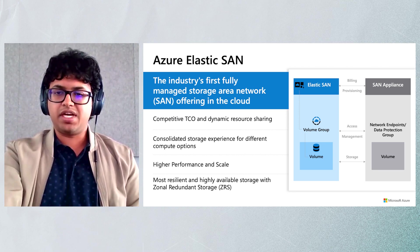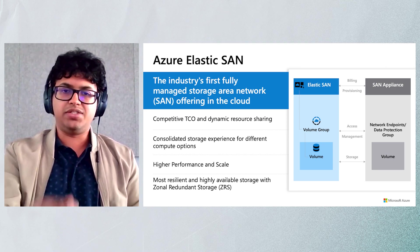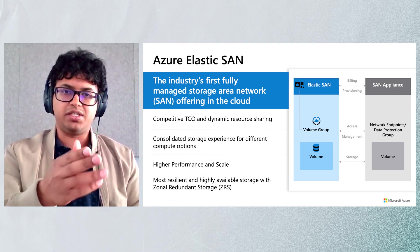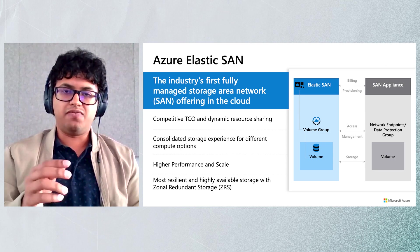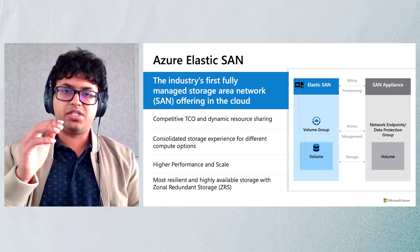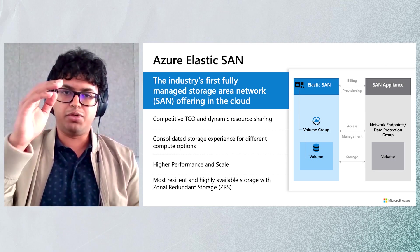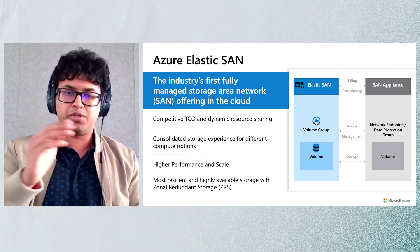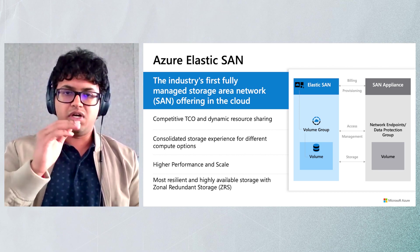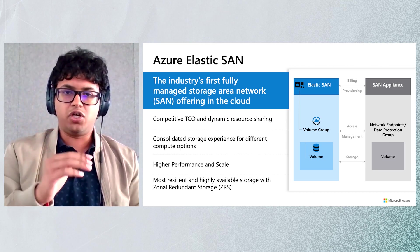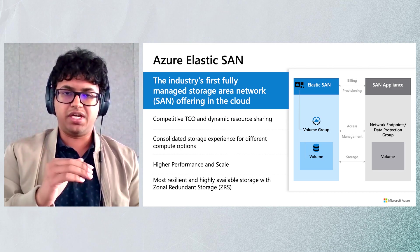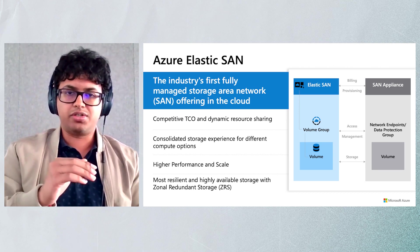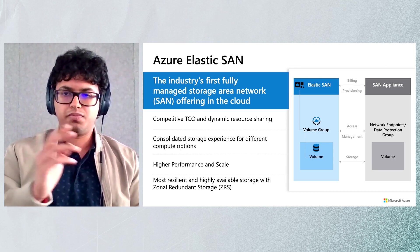Network configurations are set at the volume group level, but they apply to all the volumes within that group. As you can see on the slides, you have the hierarchy: the Elastic SAN, under which we have volume groups — up to 20 — and then you have volumes underneath that, with up to 1,000 volumes per volume group.